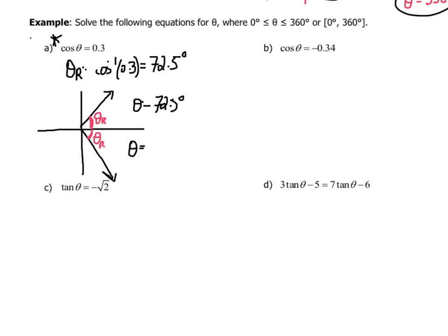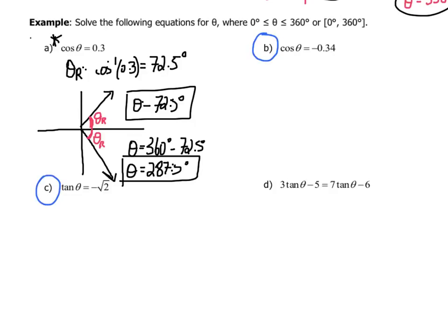In quadrant 4, my angle is 360 minus the reference angle of 72.5. So, 360 minus 72.5 gives me 287.5 degrees. So, my two solutions are theta equals 72.5 and theta equals 287.5. From here, bring to class an attempt at B, C, and D, as well as the problems on the next page. Feel free to have some trouble with it, though. And we'll answer some questions together. We'll check your work. And then, once we're sure that this is making sense, you can go on to the homework on the next page.